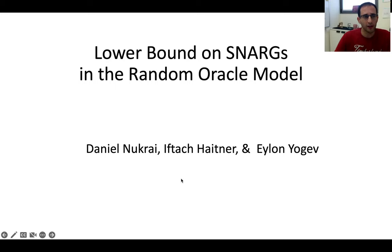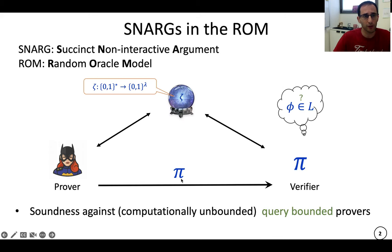Hi everyone, my name is Ilan Yogev. This is joint work with Daniel Nukrai and Iftach Haitner. This talk is about lower bounds on SNARGs in the random oracle model. Let me give you a brief introduction.